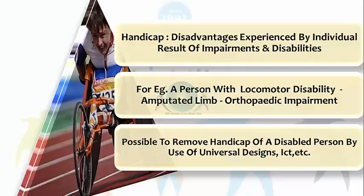Handicap is basically the disadvantages experienced by the individual as a result of impairments and disabilities. For example, a person with a locomotor disability may have an amputated limb which leads to orthopedic impairment. This consequently causes locomotor disability and will handicap him in his accessibility to a large number of public spaces. However, it is possible to remove the handicap of a disabled person by the use of universal designs, information communication technology, etc.